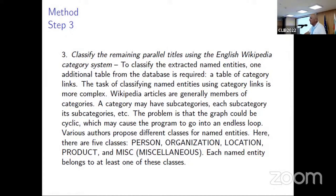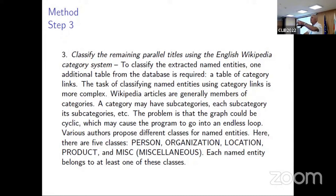The third step brings the most value to the lexicon: classification. To perform classification, the algorithm uses the English Wikipedia category system, which is why the English Wikipedia must be included in order to classify named entities. The Wikipedia category system is very complicated and, importantly, it is cyclic — meaning the algorithm can traverse different levels of categorization and end up back at the top, easily entering an endless loop.